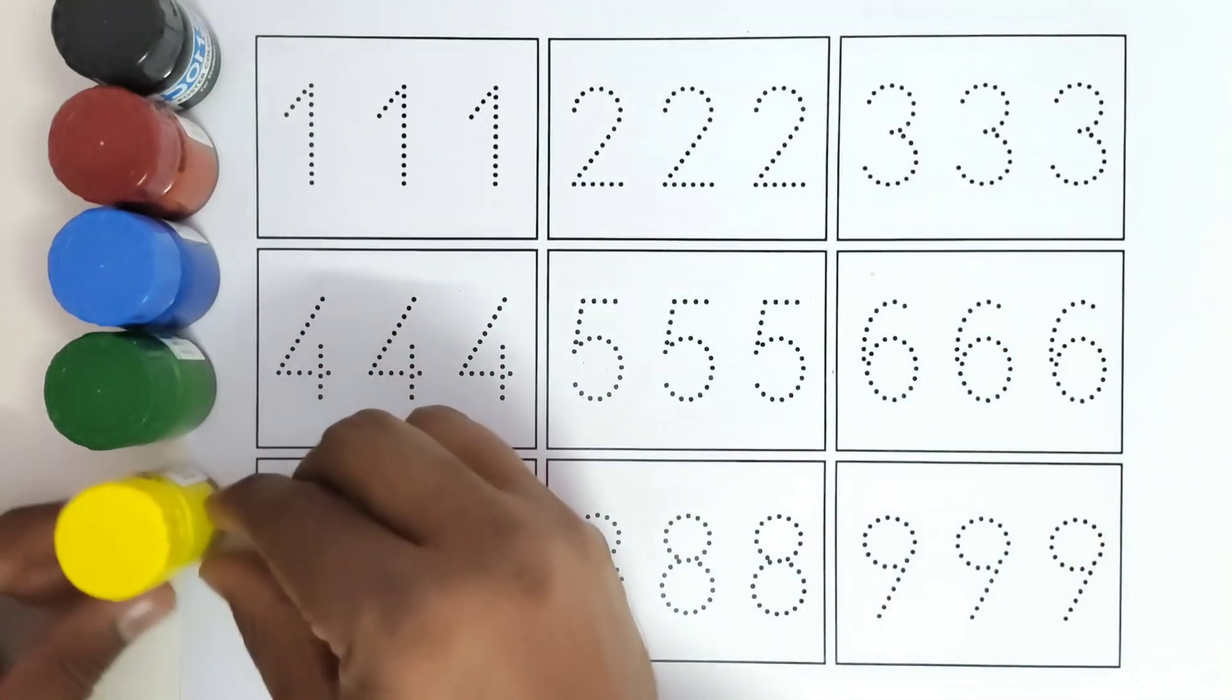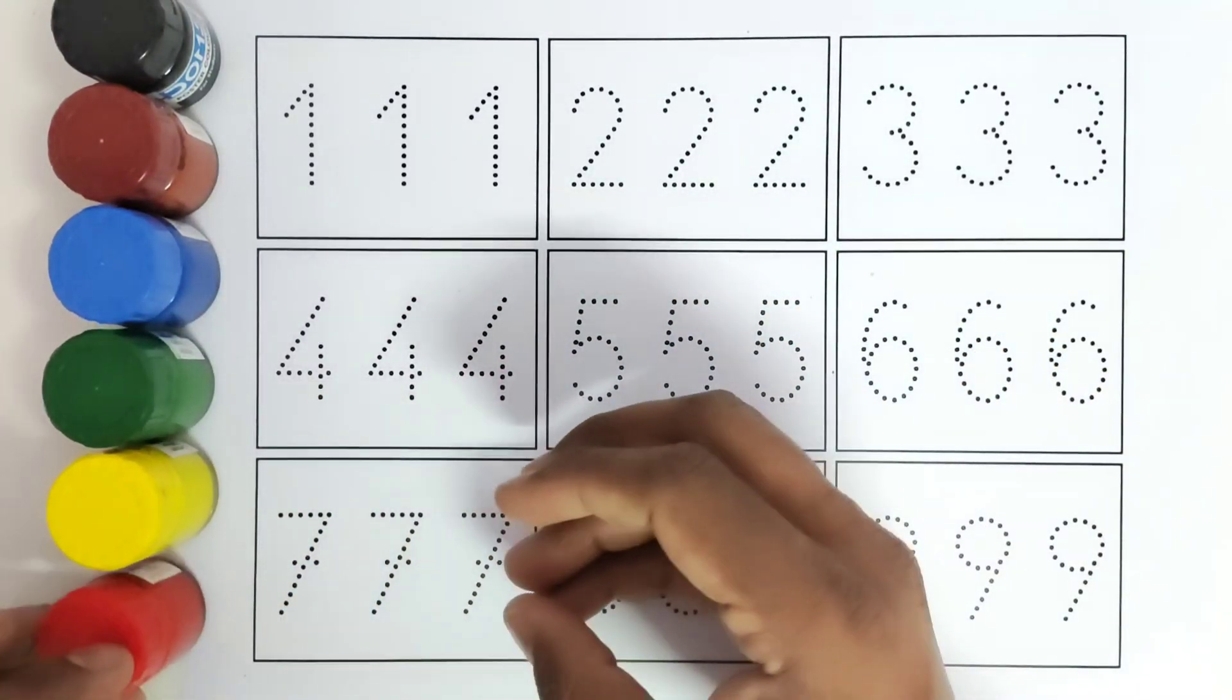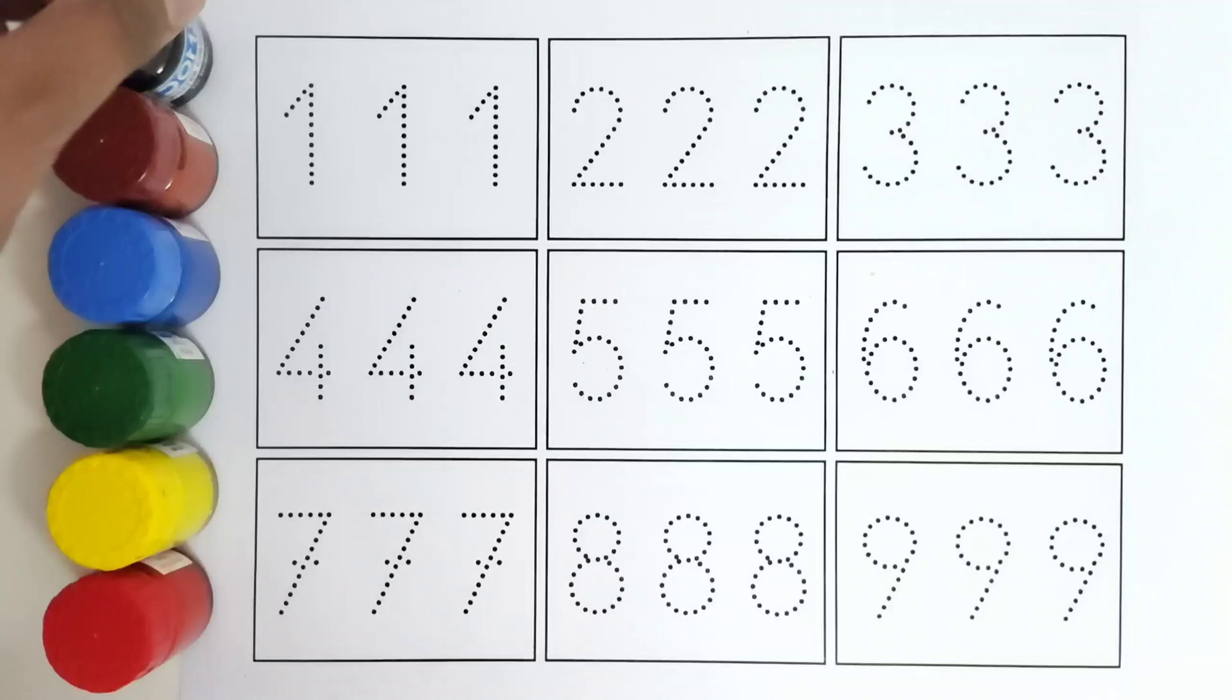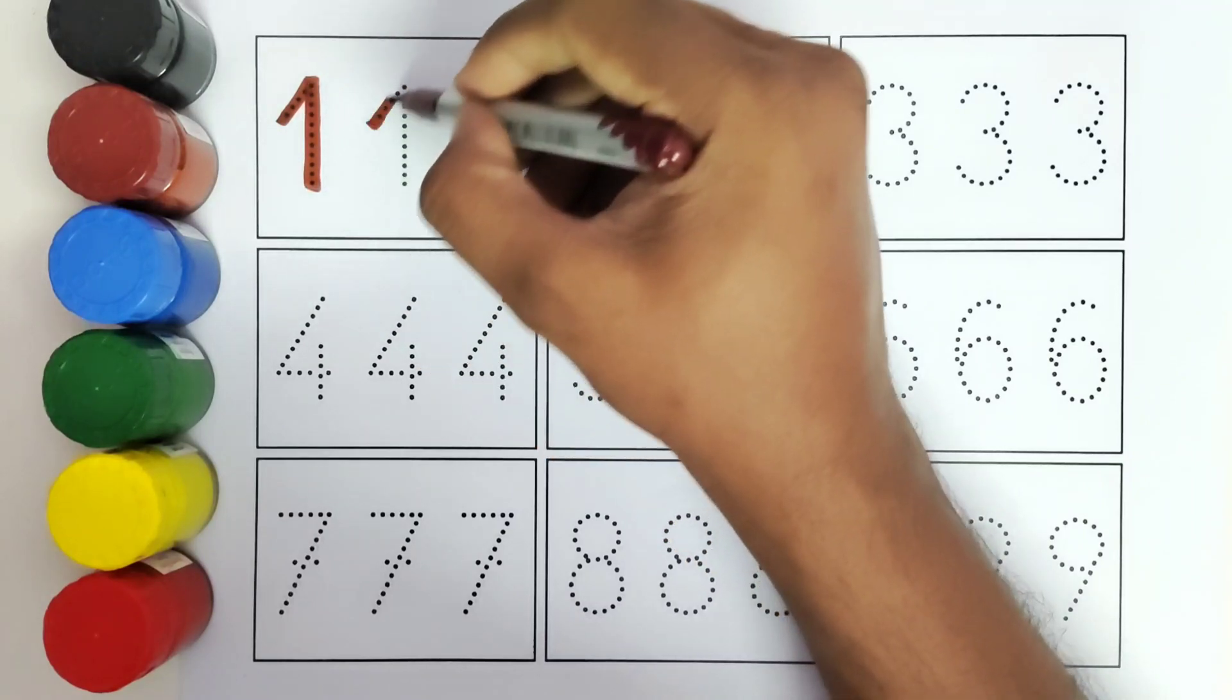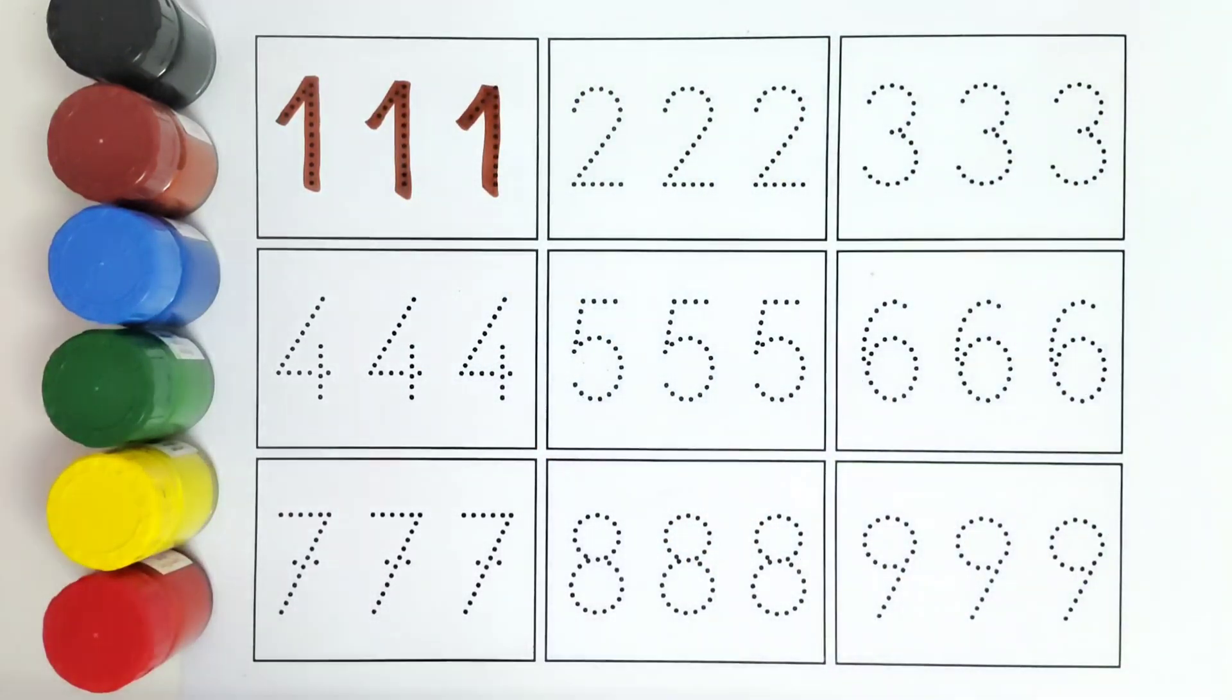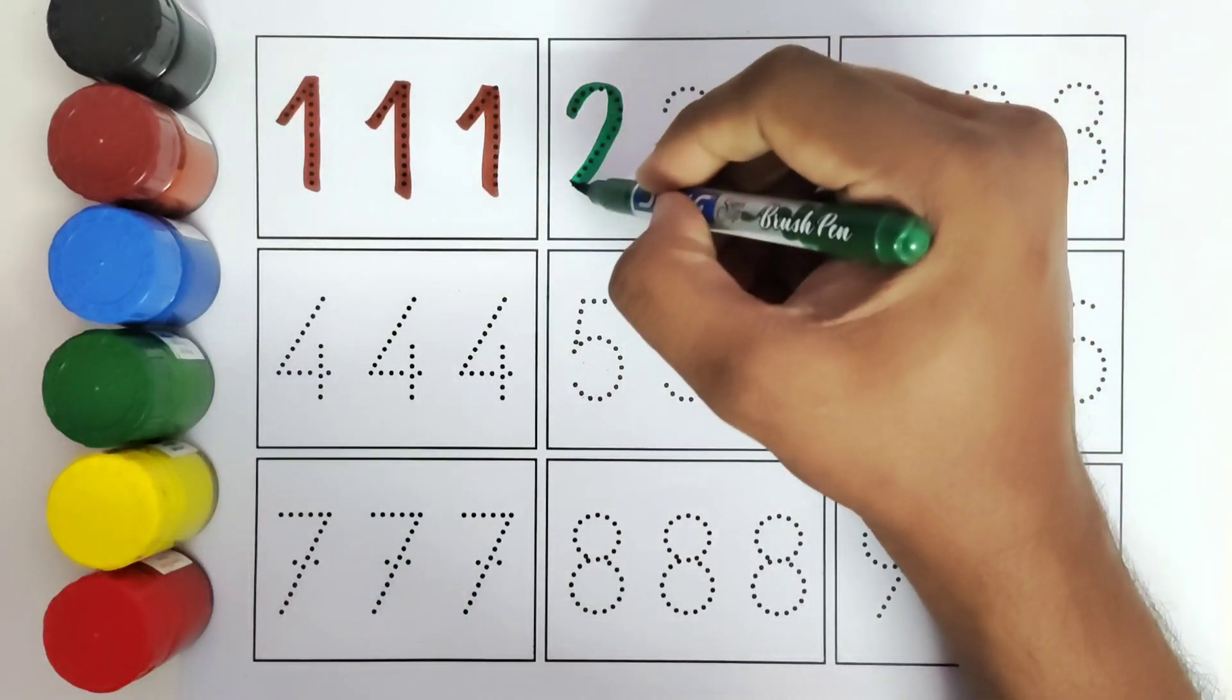Let us get started. Number one, one, one. This is two, number two, two. This is three, number three, three. This is four, number four, four. This is five, number five.